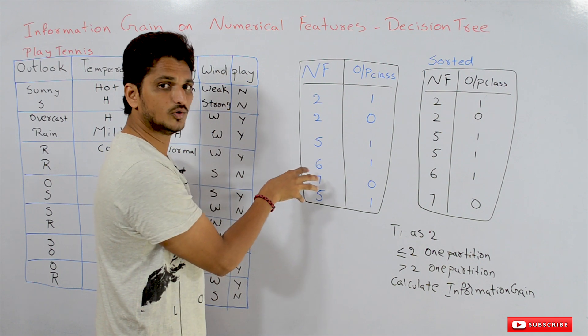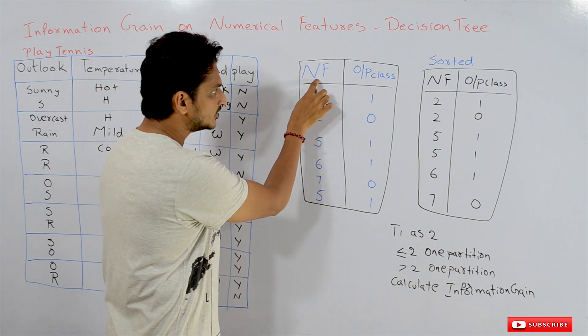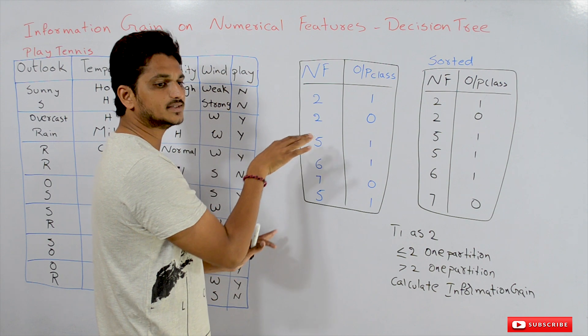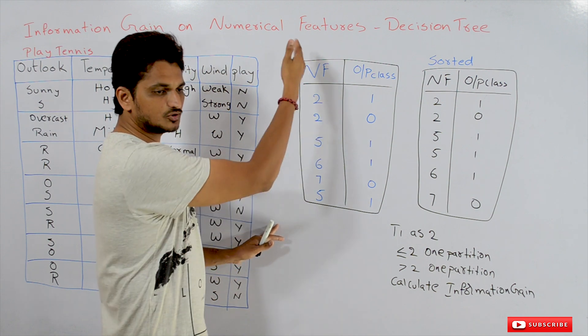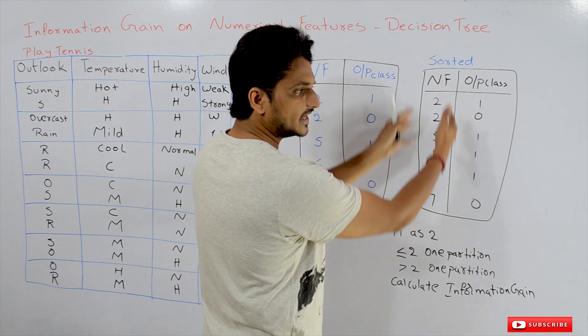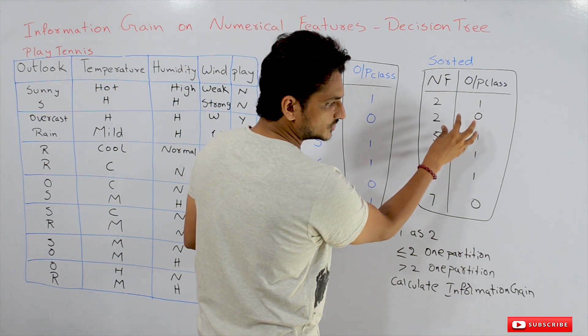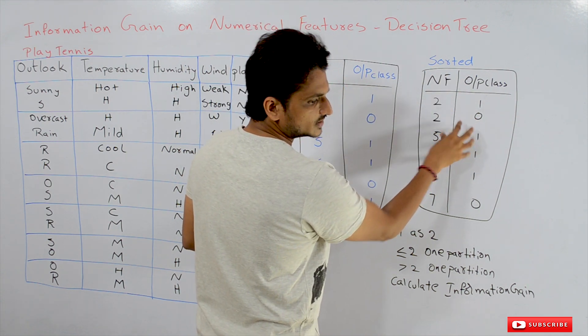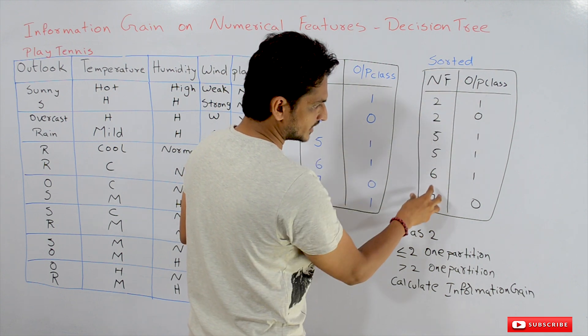What we do here is take the numerical feature column and sort it in ascending order. After sorting this numerical feature in ascending order, we get this new table. This is our dataset after sorting our numerical feature.